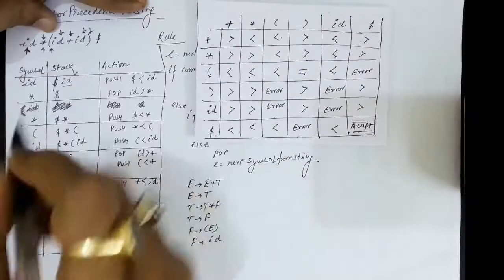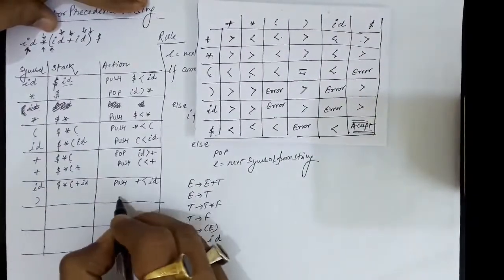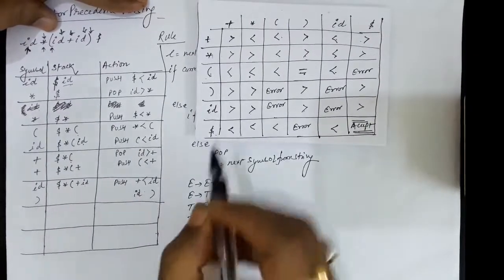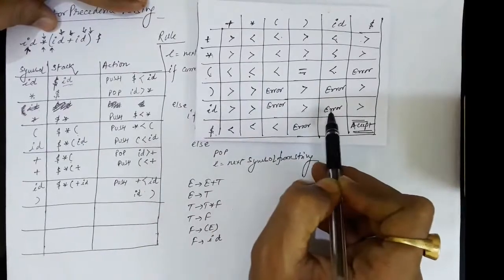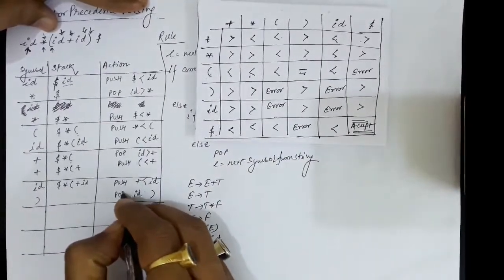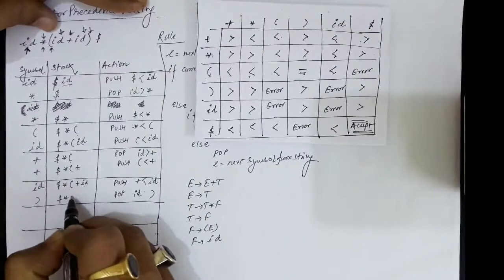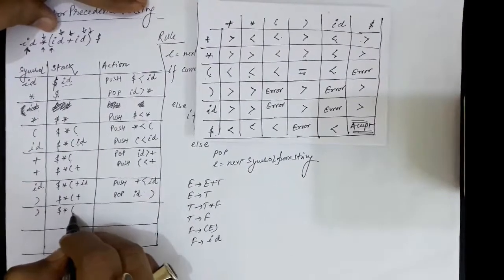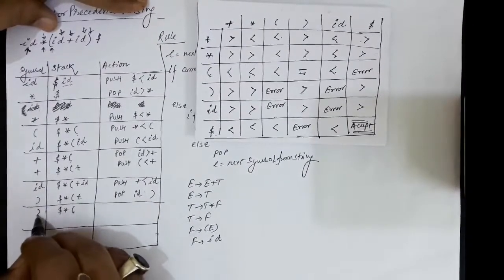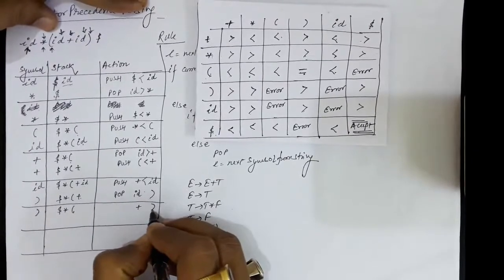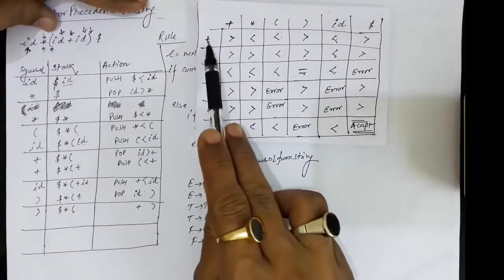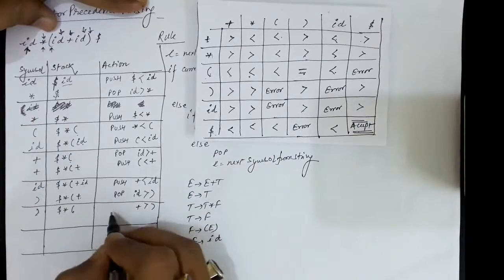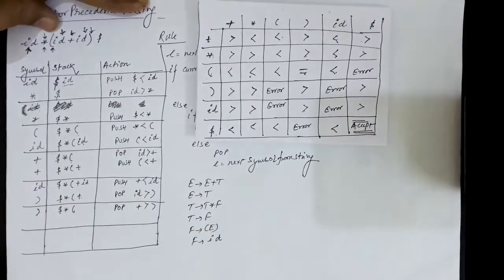Next symbol to check is closing parenthesis. We check the precedence of stack top id over closing parenthesis — id has greater precedence, so we pop the stack and id is removed. Next we check precedence of plus over closing parenthesis — plus has greater precedence than closing parenthesis, so we pop the stack and plus is removed.